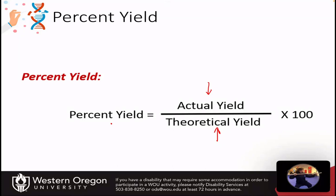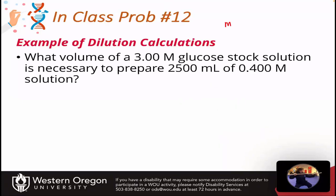So let's do our dilution practice problem. M of the stock times the volume of the stock equals the concentration of our dilution times the volume of the dilution. We need to figure out what volume of a 3.00 molar glucose stock solution is necessary to prepare 2,500 milliliters of a 0.400 molar solution. We have the concentration of the dilution and the volume of the dilution. Our concentration is both in molarity, so that's great, and the volume we get from this equation should be in milliliters.